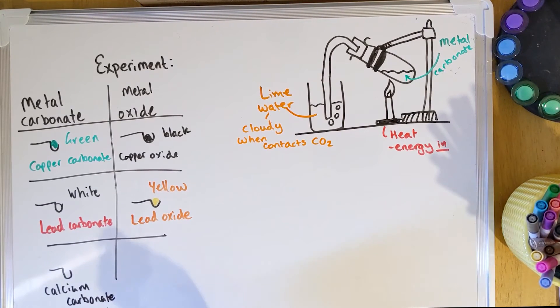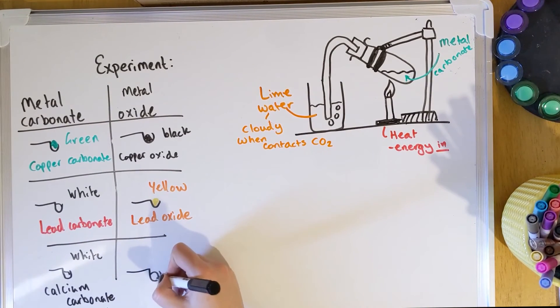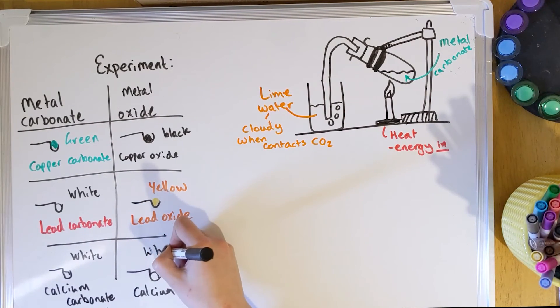You might look at calcium carbonate as well. Calcium carbonate is white, and after it decomposed you get calcium oxide, and this sadly is also white. Would have been nice to have another color change.